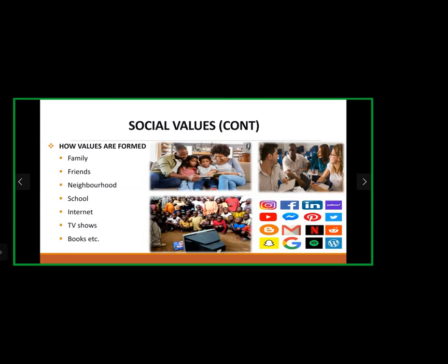Neighbors and everyone in the neighborhood, classmates, teachers, and junior colleagues in school also contribute. People learn a lot of values from the internet and TV shows. Books are also an important source — personally, I've learned from Emotional Intelligence by Daniel Goleman, about human behavior and relating to others, and How to Win Friends and Influence People by Dale Carnegie.